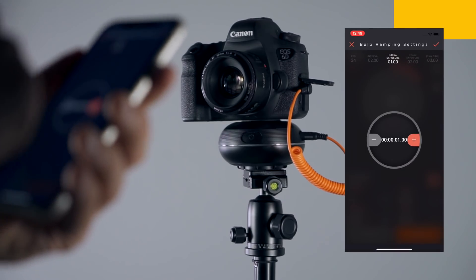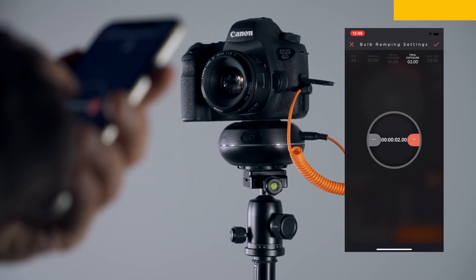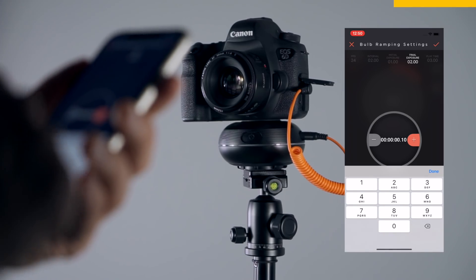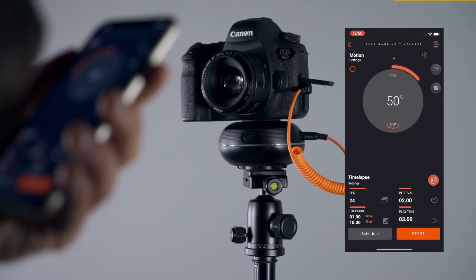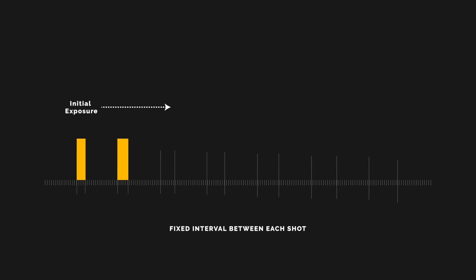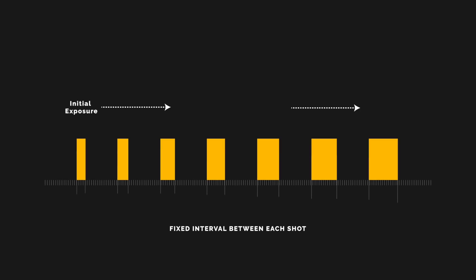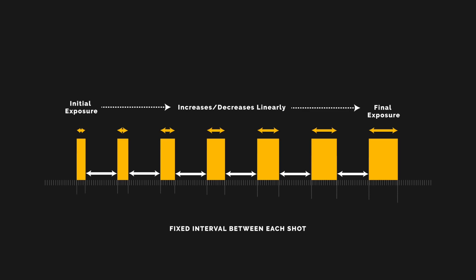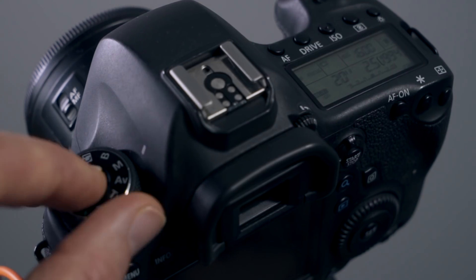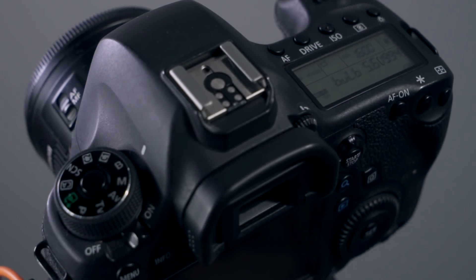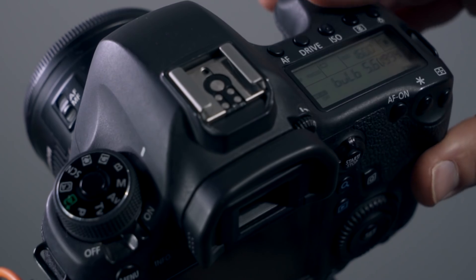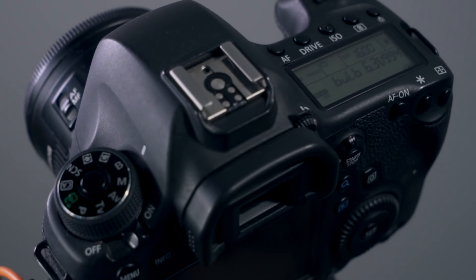The Final Exposure parameter defines the exposure value of the last shot. You can set custom exposure from milliseconds to hours depending on your needs. The process starts with initial exposure, and the exposure is then changed towards the final exposure linearly after each frame is taken, with the last shot taken at the final exposure. The ramping can be done either ascending or descending depending on initial and final exposure values. Do not forget to use your camera in Bulb mode when using the Bulb Ramping Time-lapse mode, as this is the only way of achieving custom exposures.